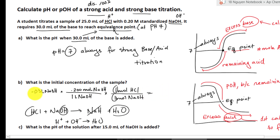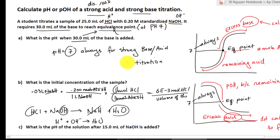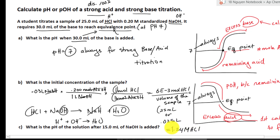Plugging into the calculator: 0.03 times 0.2 gives us 6 × 10⁻³ moles of HCl. Now I divide by the volume of the sample, which is 25 milliliters or 0.025 liters. This gives us 0.24 molarity HCl — that is the initial concentration of our acid, and now we know the concentration of hydrochloric acid in that sample.